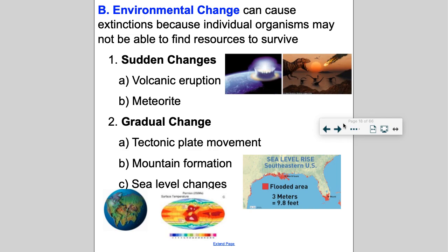Sea level changes displace organisms. Organisms need to move out of that area, otherwise they're going to drown. We have a lot of cities and people that live along the coastline — there's a high percentage of people that live along coastlines — and pretty soon that's all going to be flooded. My suggestion is you don't live on the coastline in the next 20 years.